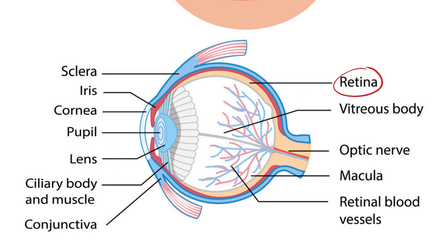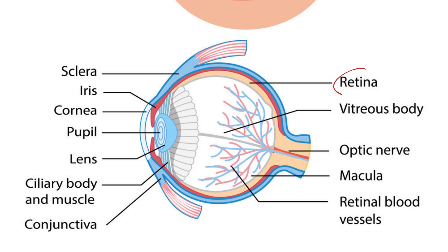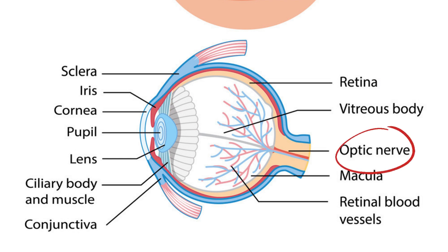The retina is a layer of tissue at the back of the eye that contains millions of light-sensitive cells called rods and cones. These cells convert light into electrical signals that are sent to the brain through the optic nerve. The optic nerve is a bundle of nerve fibers that carries electrical signals from the retina to the brain.